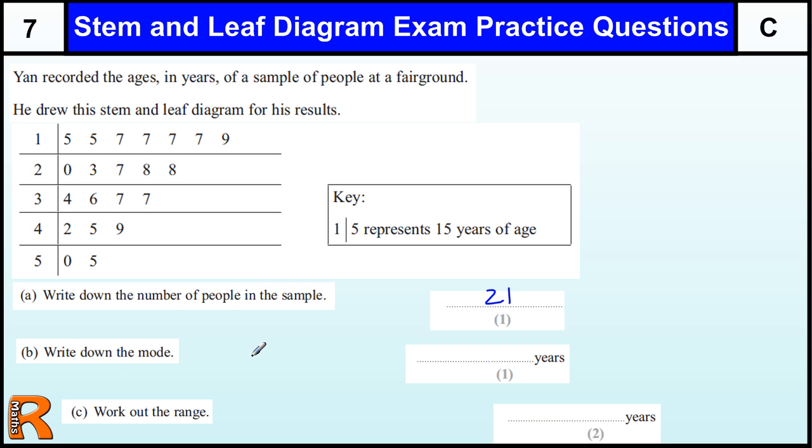Write down the mode. What is the most common number? It's not what digit appears the most. So there's lots of 7s. You've got to remember what these numbers represent. So this number is not a 7. It's 17. And so is that one. And so is that one. And so is that one. So there's four 17s there. I don't think there's four of anything else. These 7s. This is 27. And this is 37. But these four 7s represent 17. So 17 years is the most common, the mode.